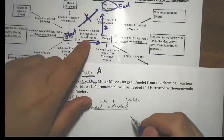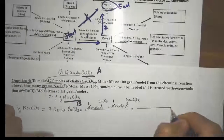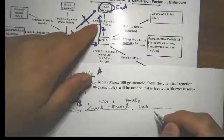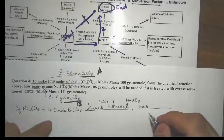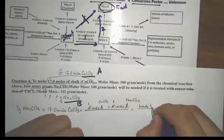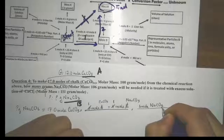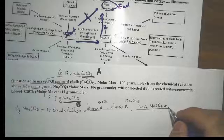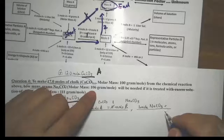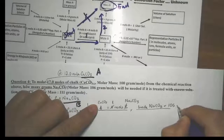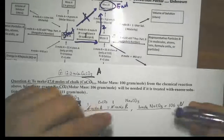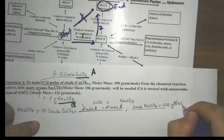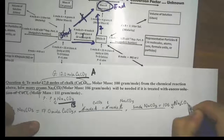Now we move to the next conversion factor, going up. We have 1 mole of B — which is now sodium carbonate, Na₂CO₃ — equal to the number of grams, the molar mass. The molar mass of sodium carbonate is 106 grams of Na₂CO₃.